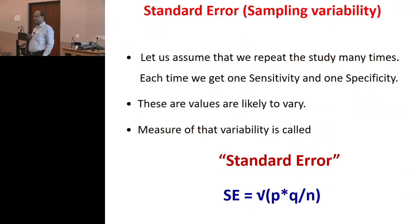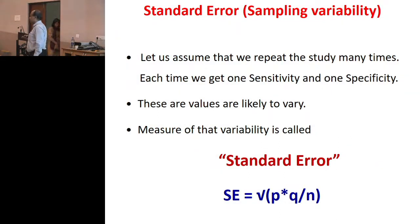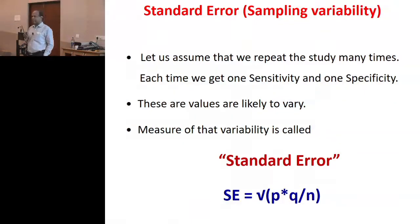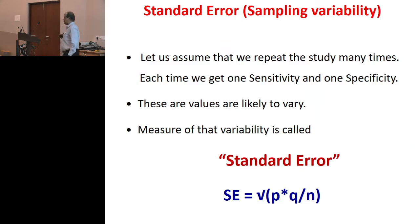Sometimes people call it how much error they would allow when doing the study — it could vary by 5% or it could vary by 10%. Some people call it error; some people call it how precisely you want to estimate it. In our institution we use the word 'precise' — how precisely you want to estimate that 80%. You have to have some idea about the standard error, meaning the variability.